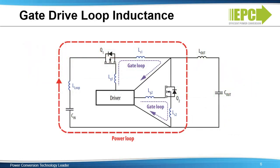The maximum allowable gate voltage for EGAN FETs of 6 volts is 1 volt above the recommended 5 volt drive voltage. This 1 volt of headroom requires an accurate gate drive supply, as well as limited inductance between the EGAN FETs and the gate driver, as the inductance can cause a voltage overshoot on the gate. Inductance in the gate loop will directly limit the switching speed of the device, and care should be taken to minimize it to achieve maximum efficiency.